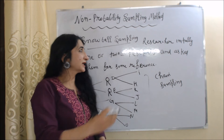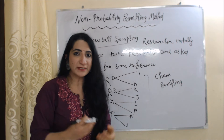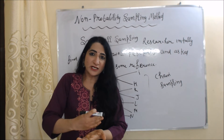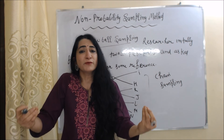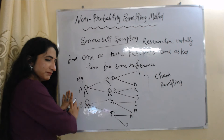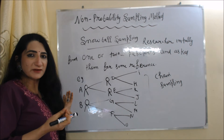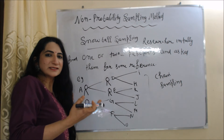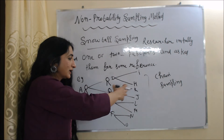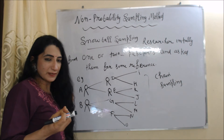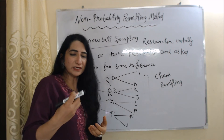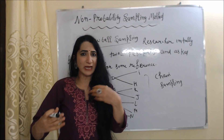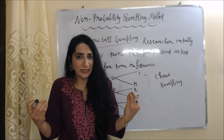Next is snowball sampling. In snowball sampling, the researcher initially finds one or two participants, collects data from them, and asks them to give references or help find other participants. For example, researcher finds A and B, who refer D, E, G, and F. The researcher goes to them, collects data, and asks for more references. This process continues until the required sample is found. It forms a network, which is why it is also called networking sampling or chain sampling. It is used when participants are very difficult to find — for example, collecting data from HIV-positive people or drug users.